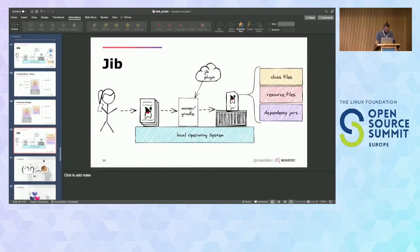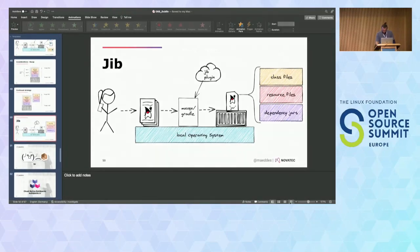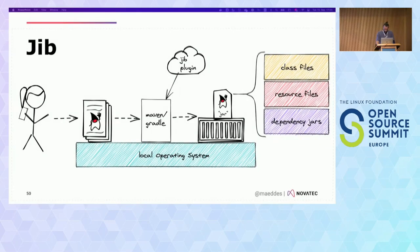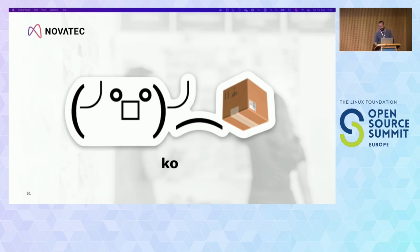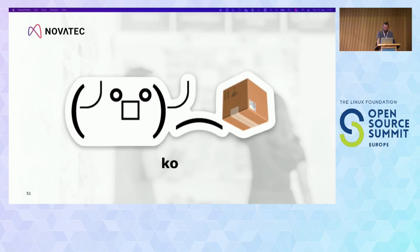Next to Jib, there is also a tool called Ko, which is technically Jib for Go applications — also a dedicated build mechanism. If you want to build containers for the Go programming language, you install this as a command line tool, execute 'ko' in the directory where your application is, and it builds and packages it straight away, and also uploads to your registry if needed.